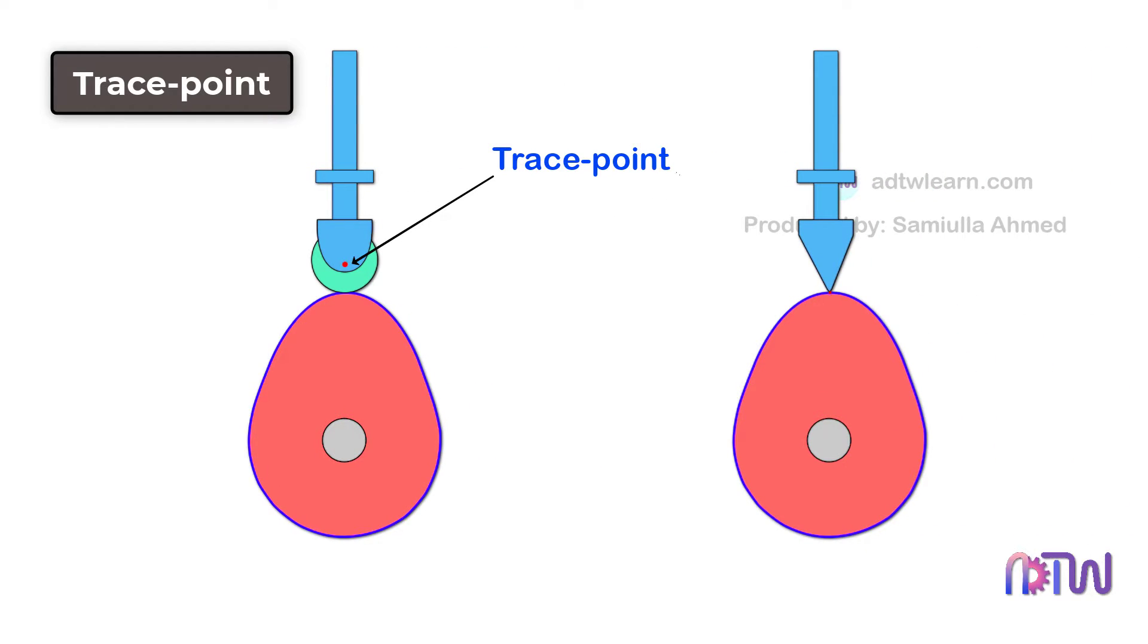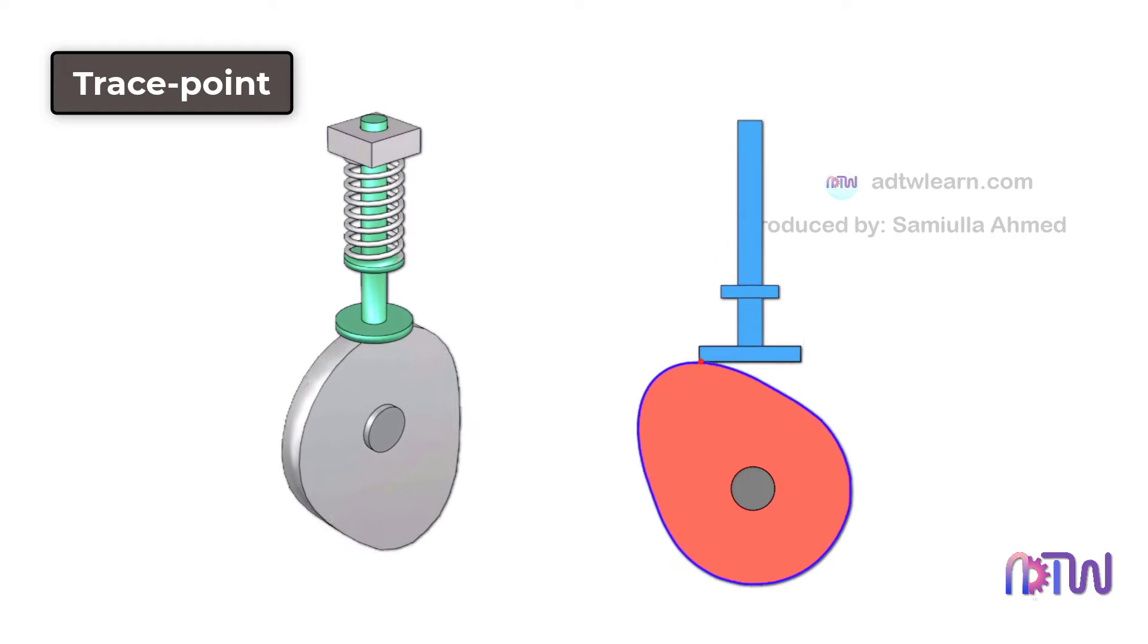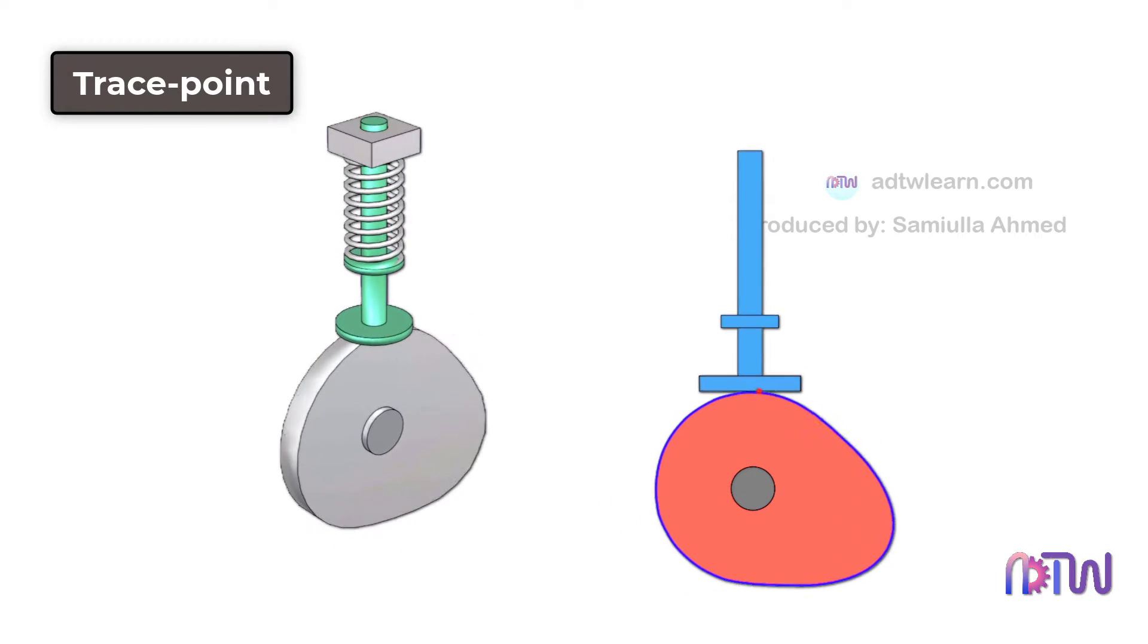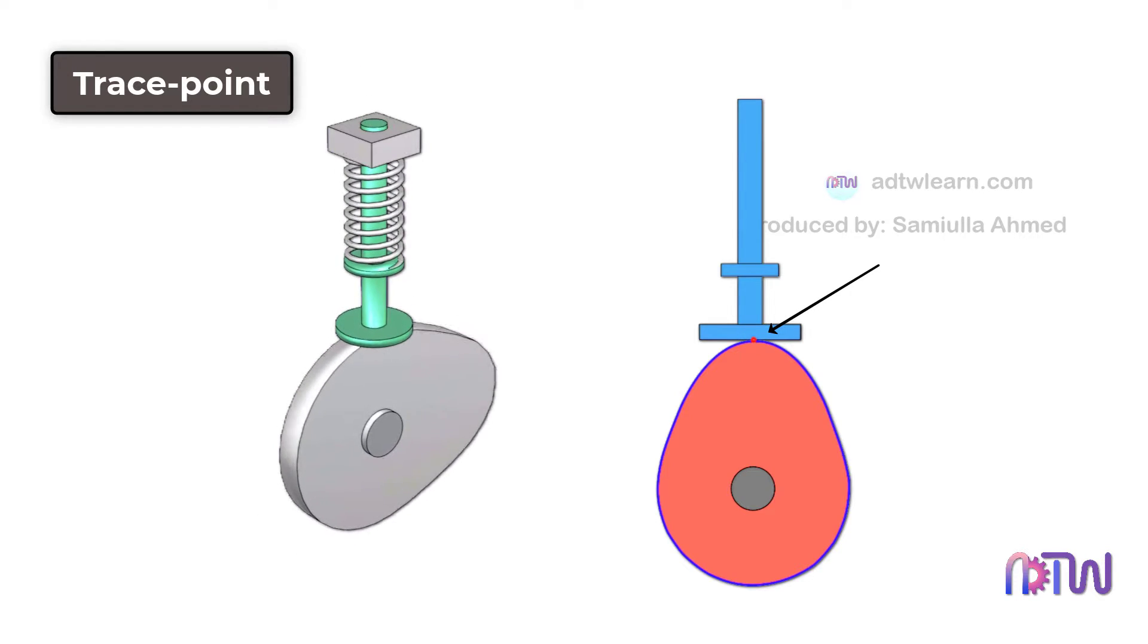For knife edge followers, this edge point is the Trace Point. For a flat-faced follower, we can see that the Trace Point is shifting. In this situation, we use the center of the flat-faced follower as the Trace Point.